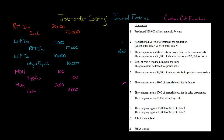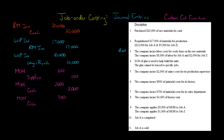We also incur some janitorial costs for the factory. Because it's related to the factory, it's a product cost, but janitorial costs are not directly traceable to the product — so that's manufacturing overhead. Assuming we paid cash, we debit manufacturing overhead for $900 and credit cash for $900.